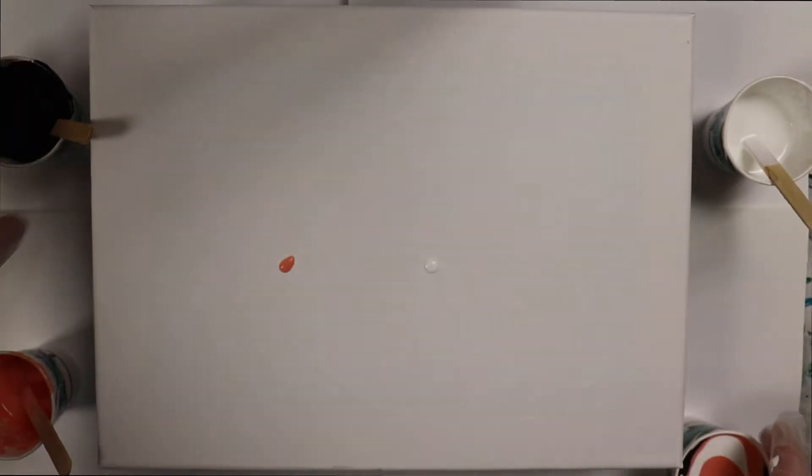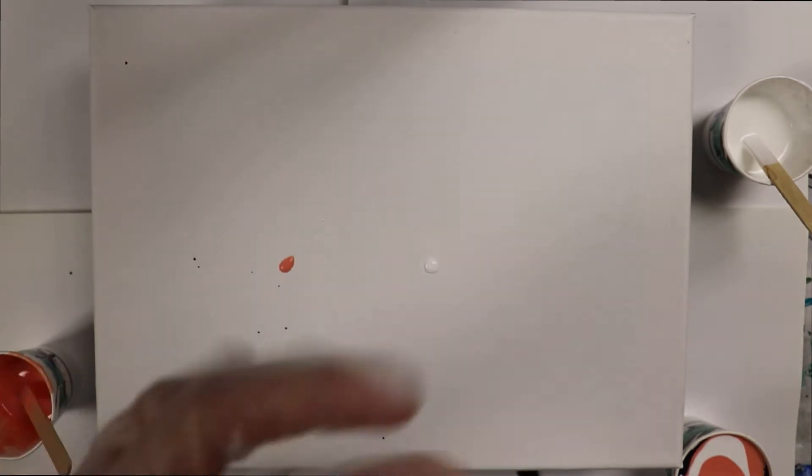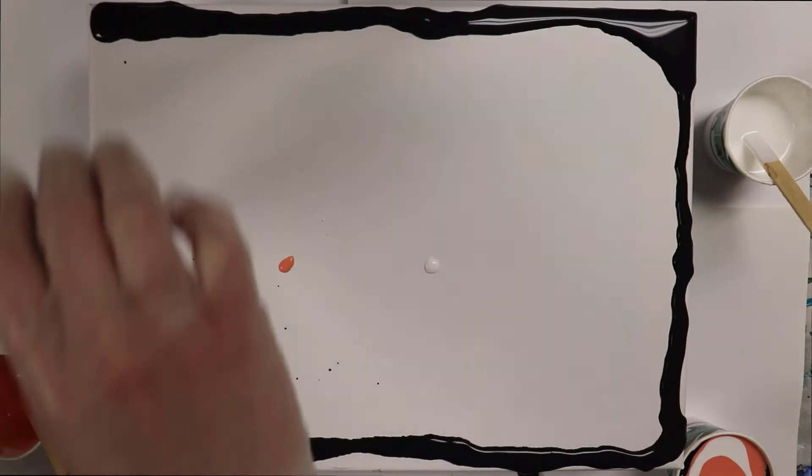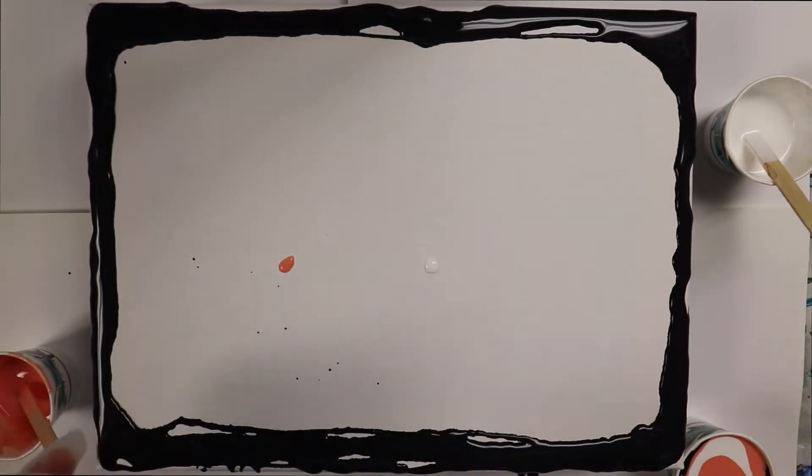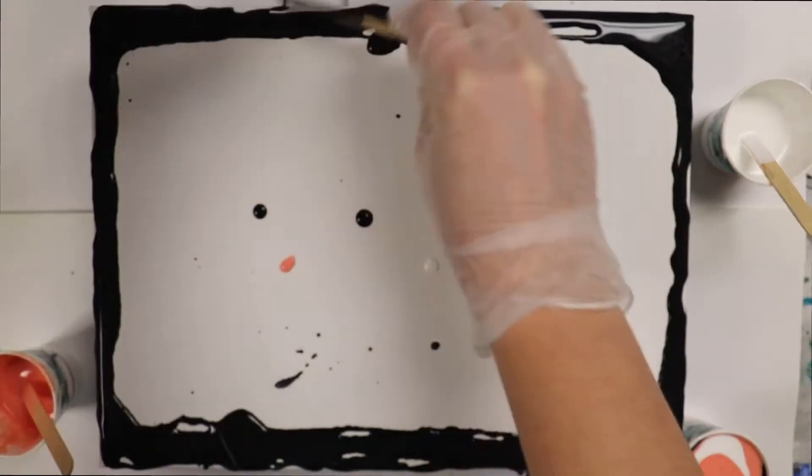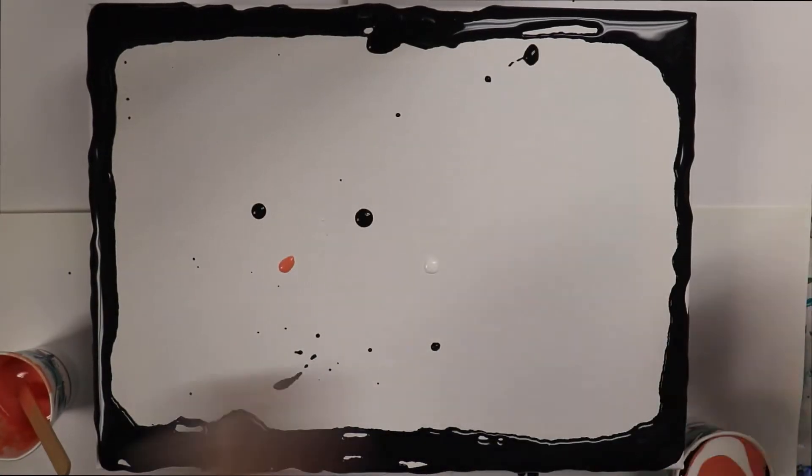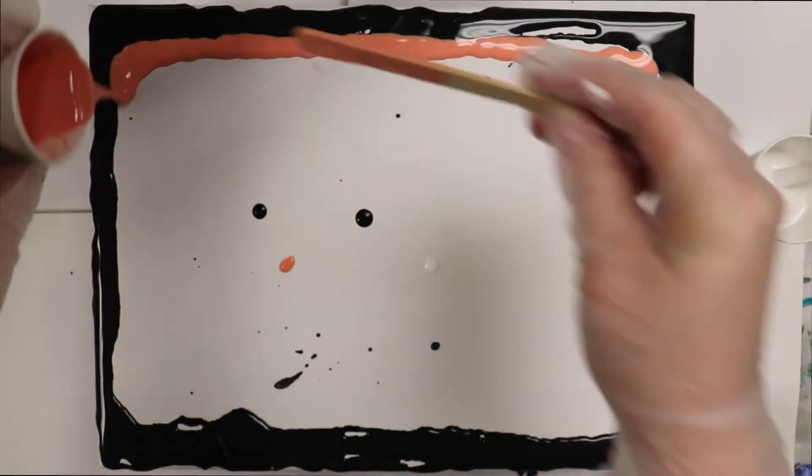So I kind of wanted a border around this piece, so in order to achieve that effect I just poured some of the black around the edge and then the peach and then the white and that gave a nice layered border around the outside of the piece.